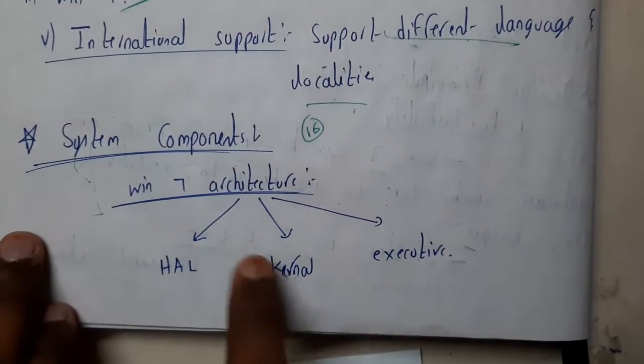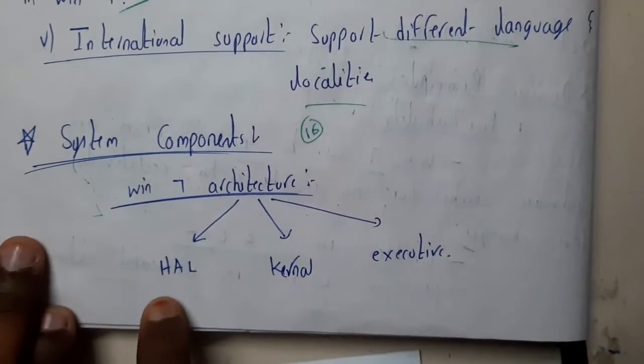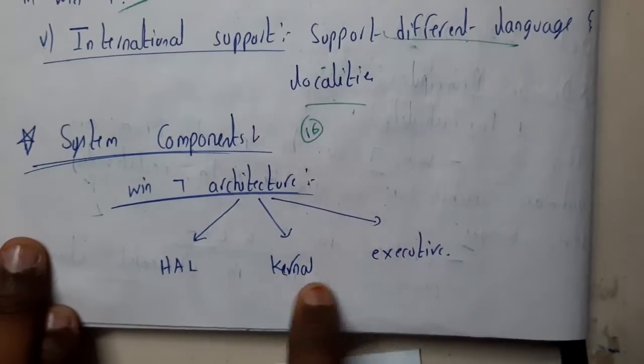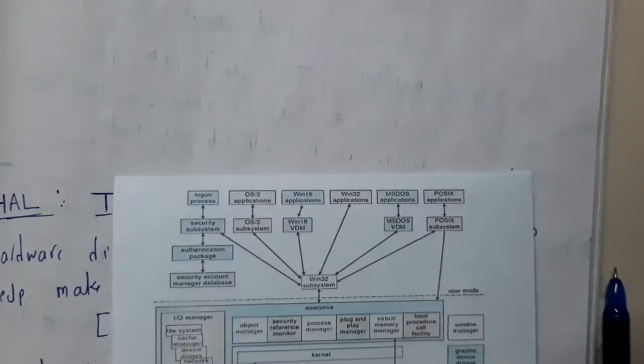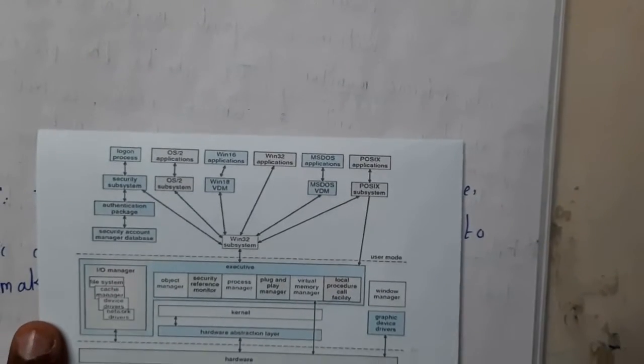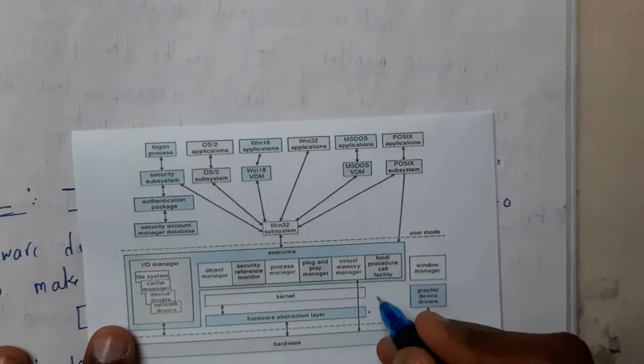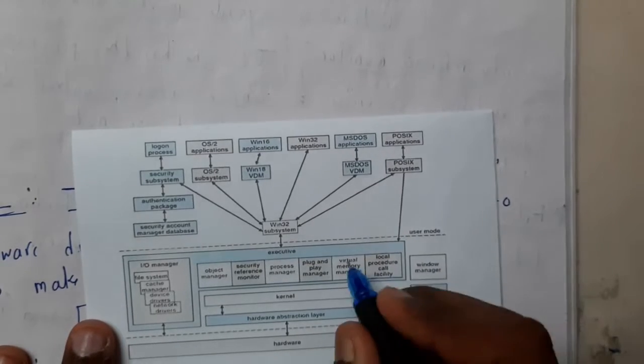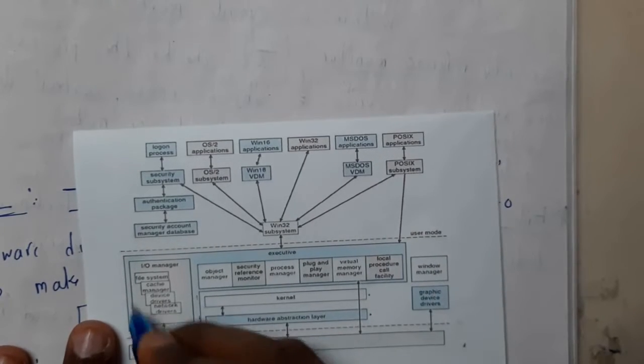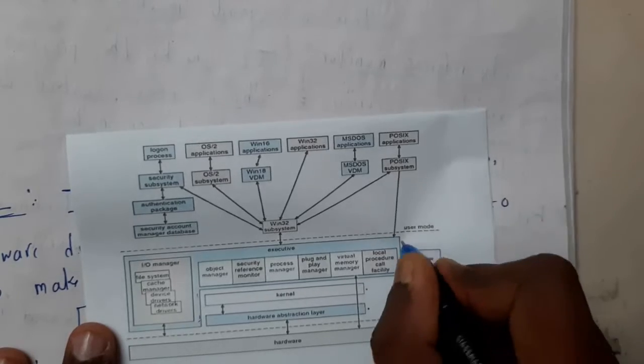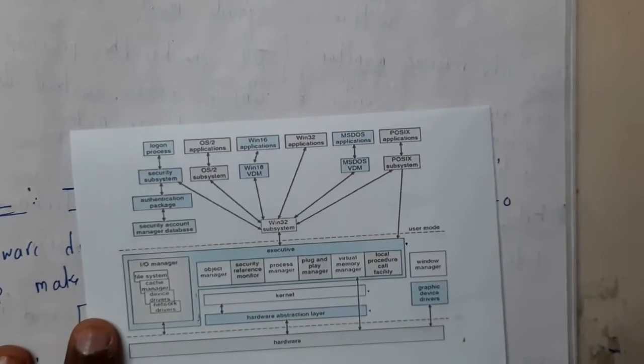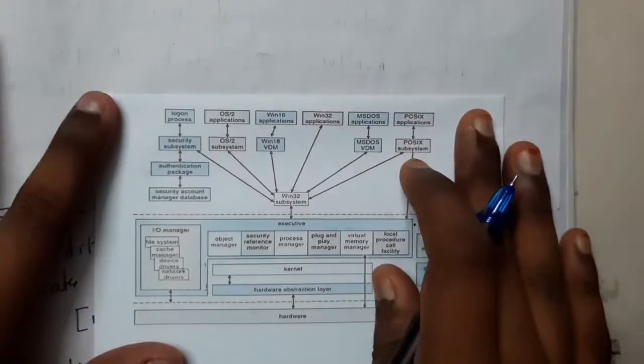We have three important parts: HAL, Kernel, and Executive. If you ask me where they are, I'll mark them. This is the first HAL, this is the Kernel, and this whole 7-shaped or L-shaped structure is your Executive.